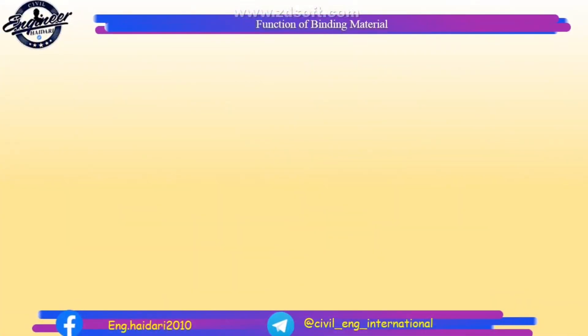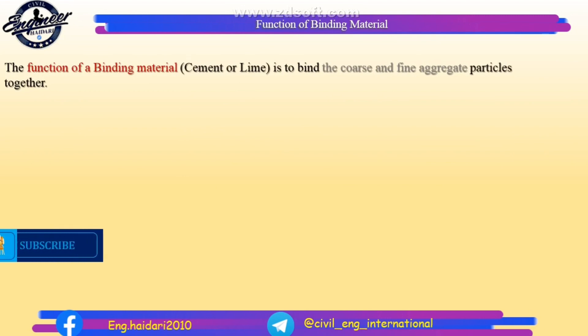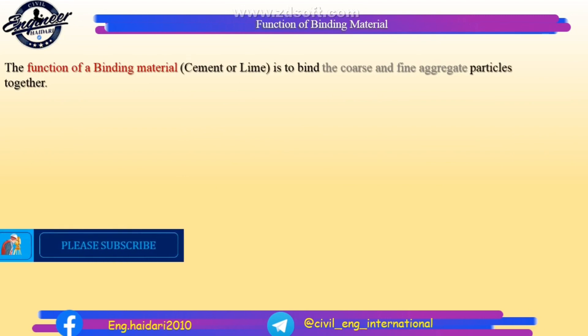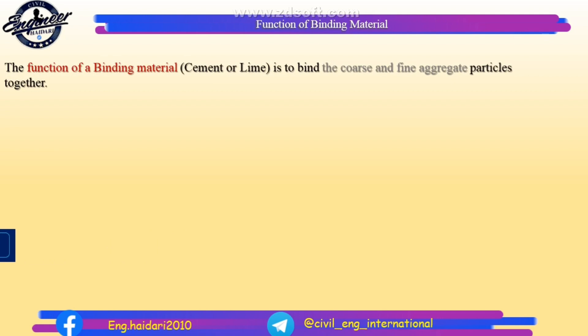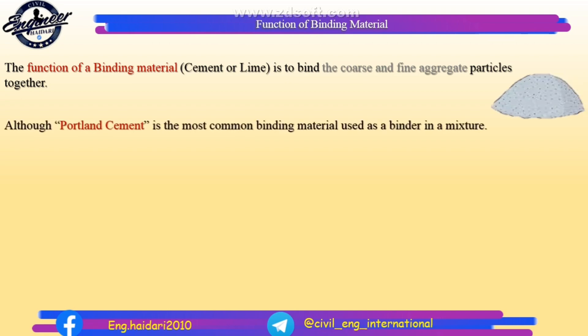Function of binding material. The function of a binding material — cement or lime — is to bind the coarse and fine aggregate particles together. Portland cement is the most common binding material used as a binder in a mixture.